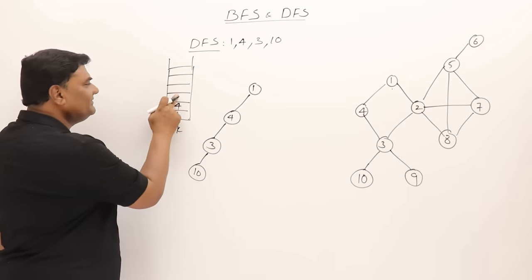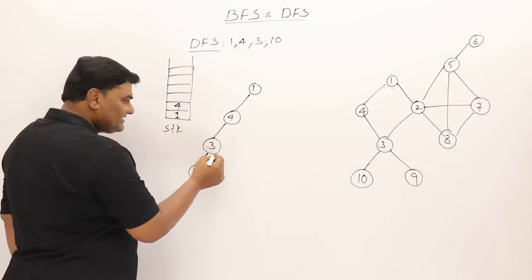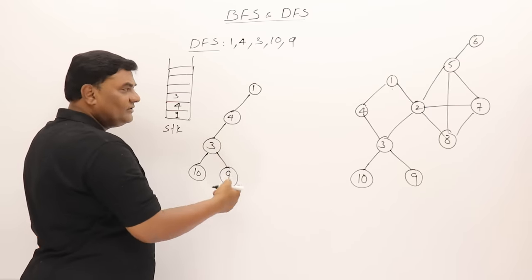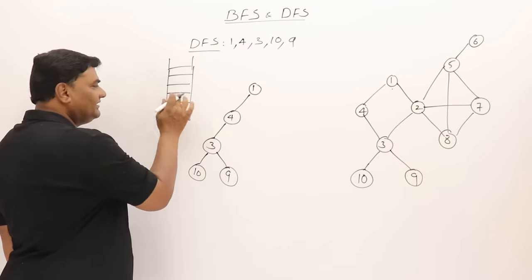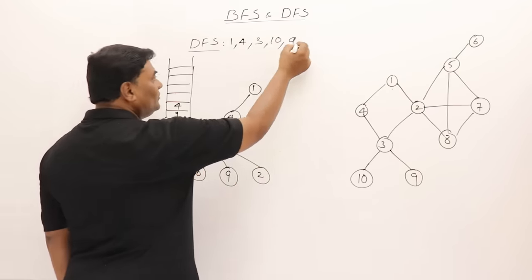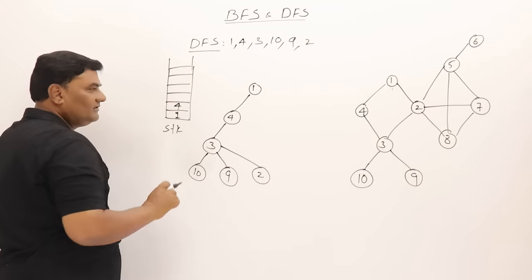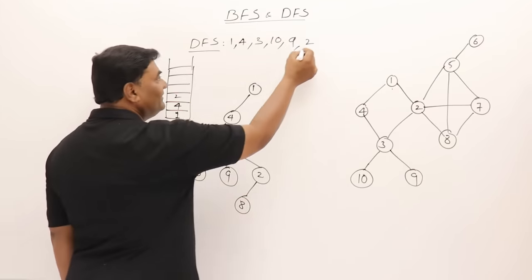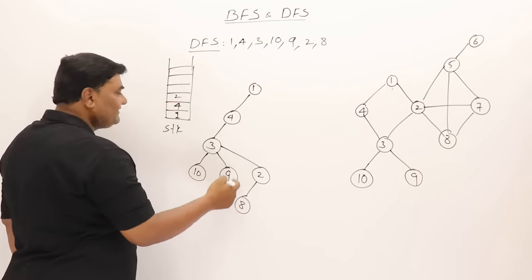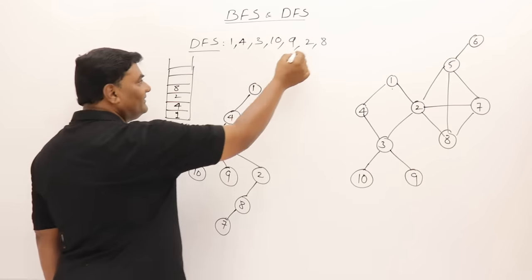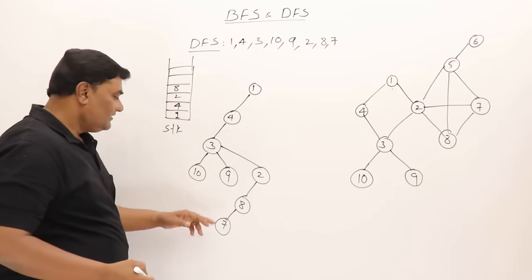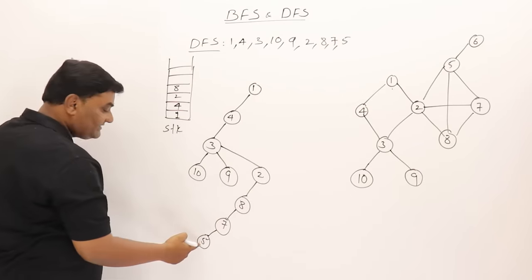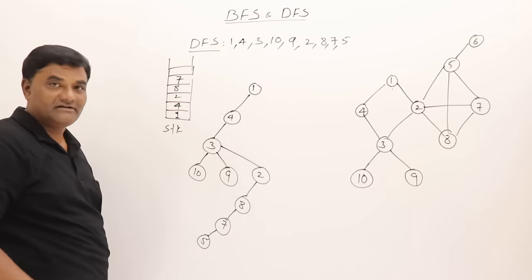The stack tells us where to go back. Go back to 3 and continue exploring it — go to 9. Visit 9, suspend 3, start exploring 9. From 9 cannot go anywhere, so go back to 3. Adjacent to 3 is also 2 — go to 2. Suspend 2 and start exploring 2. From 2 go to 8. Visit 8, suspend 8, start exploring 8. From 8 go to 7. Visit 7, now explore 7 — from 7 go to 5. Visit 5.